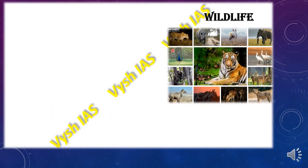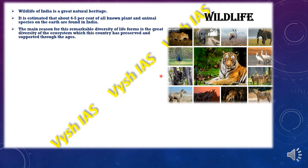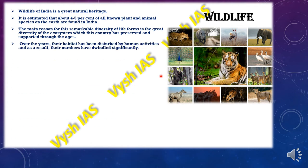India has a great natural heritage in the form of wildlife. It is estimated that about four to five percent of all known plant and animal species on earth are found in India. The main reason for this remarkable diversity is the different types of diverse ecosystems found in the country, which have been preserved for a long time. Over the years, however, disruption of habitats by human and developmental activities has caused wildlife numbers to decline increasingly.